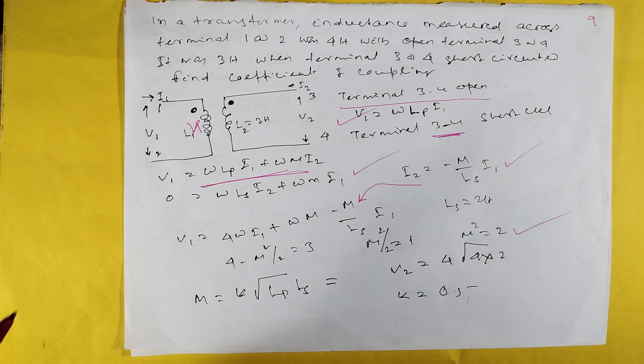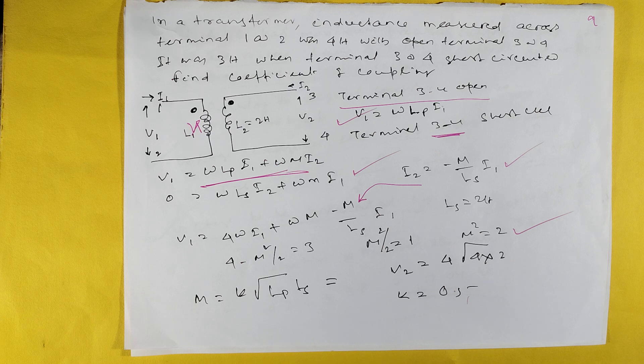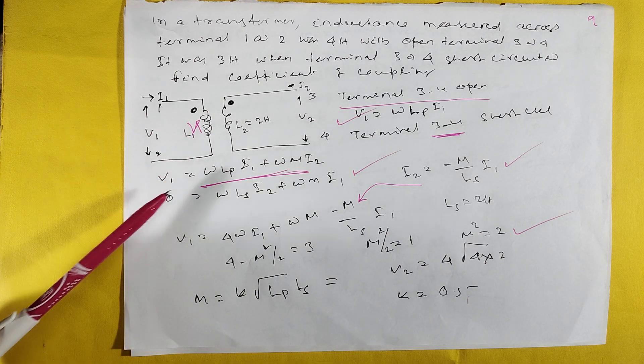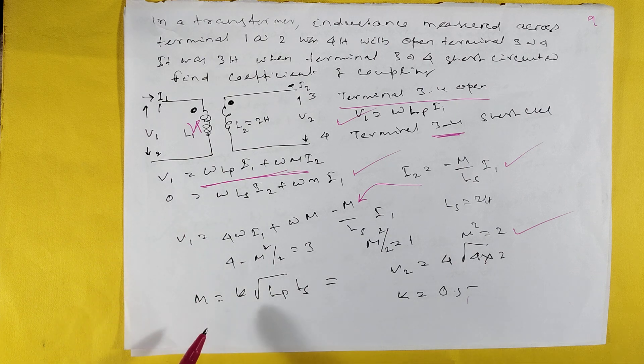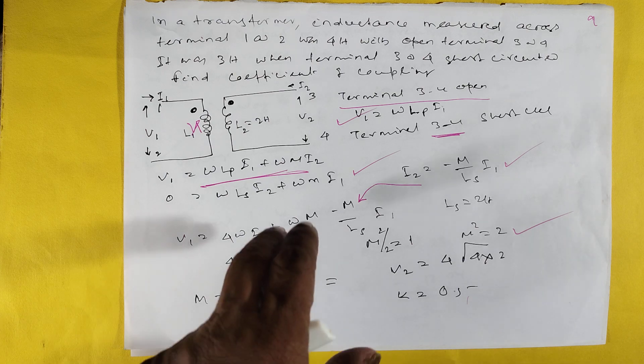A transformer: inductance measured across terminals 1 and 2 with terminals 3 and 4 open is 4 henries. When terminal 3 is short-circuited, find coupling coefficient. If you work through the complete calculation with V1, multiply by k. Automatically k is coming to 0.5. It's not very easy but seems complicated.